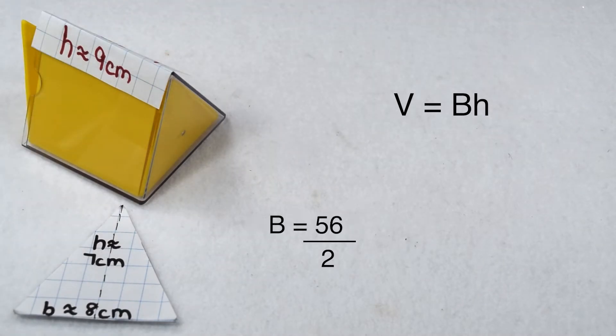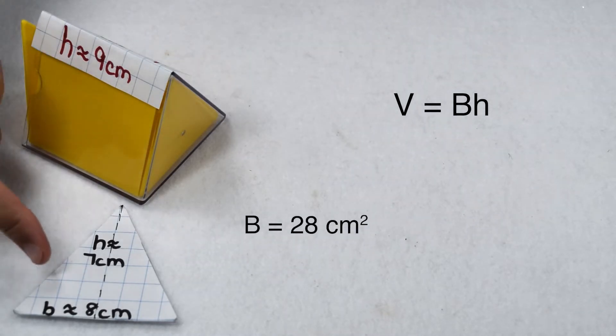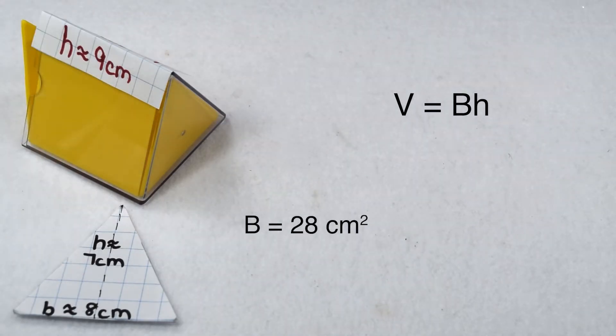8 times 7 is 56. 56 divided by 2 is 28. So area of our base comes out to be 28 square centimeters.